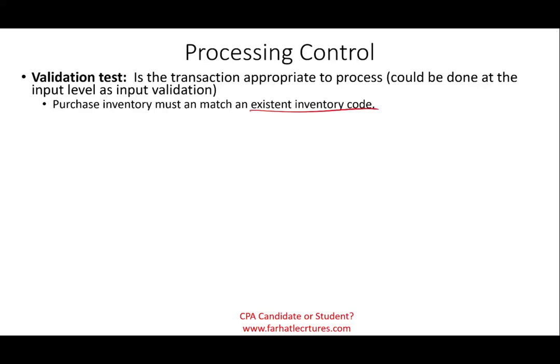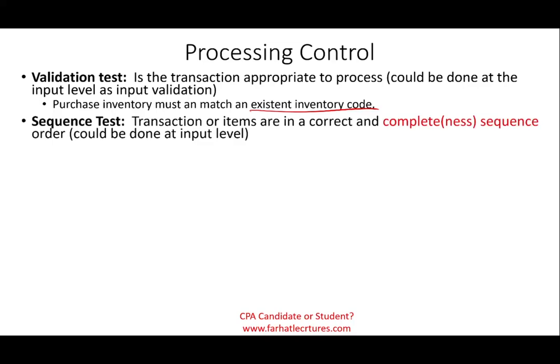Again, the validation test could be done at the input level, but let's assume somebody overrode the system or the input level doesn't have this validation feature — hopefully the processing controls embedded in the software will stop it. We could also have something called a sequence check or sequence test, which means transactions or items are verified to be in correct and complete sequence. This could also be done at the input level. You could also have a completeness test inside the processing — usually it's done at the input level, but it can also be done at the processing level.